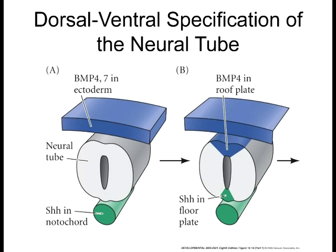One of the main signals that comes from this chord mesoderm or notochord is Sonic Hedgehog. Sonic Hedgehog starts being secreted in a morphogen gradient. High concentrations of Sonic Hedgehog then induce the most ventral region of the neural tube to become a new signaling center, which also starts secreting Sonic Hedgehog in a morphogen-like gradient.